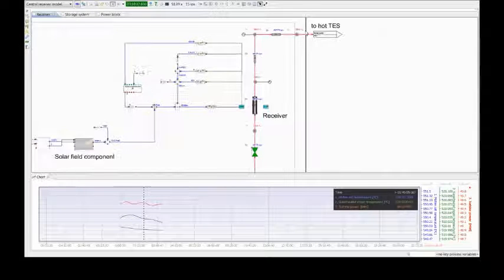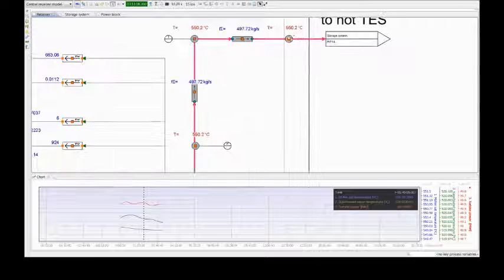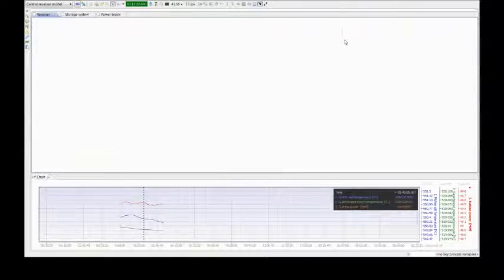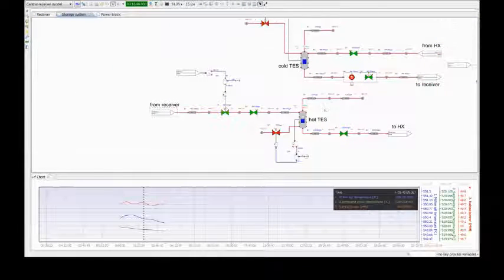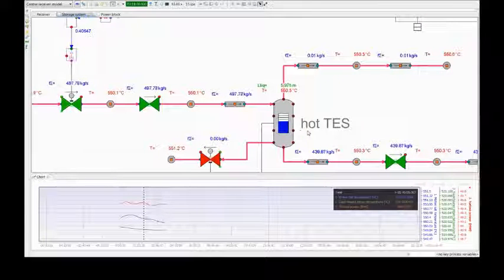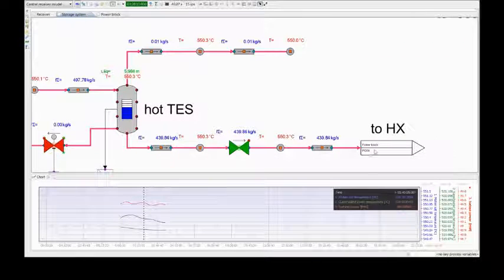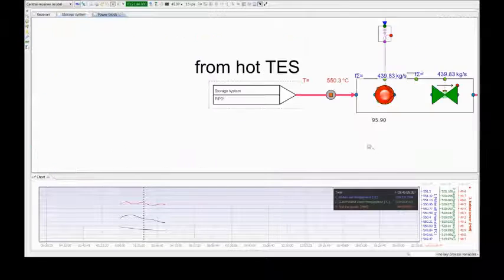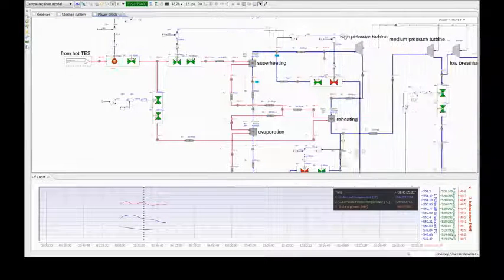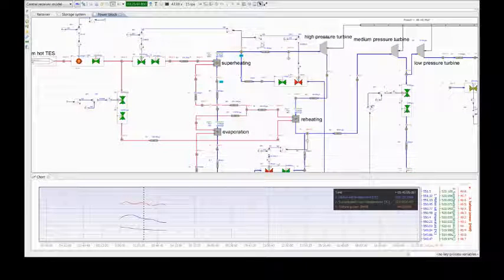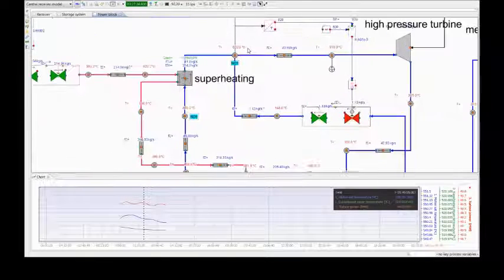During the simulation, one can select and monitor just about any values related to the process and control systems to be shown on the model diagram and also to record these to external files. For some process components, animations of shapes and colors can be used to indicate the state of the process.